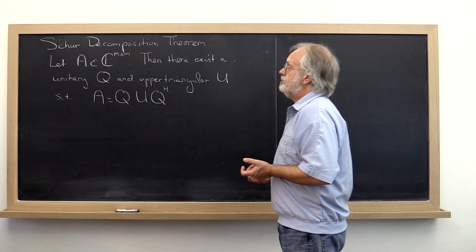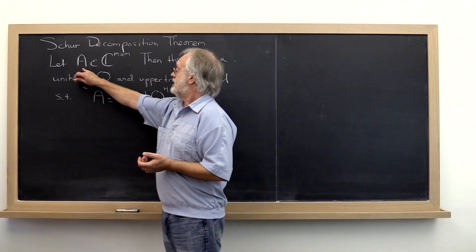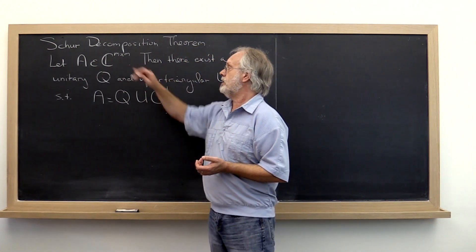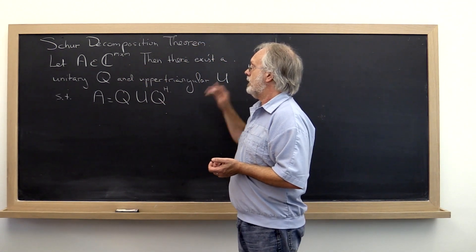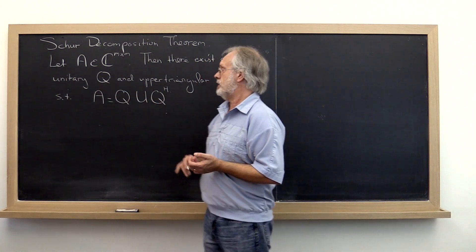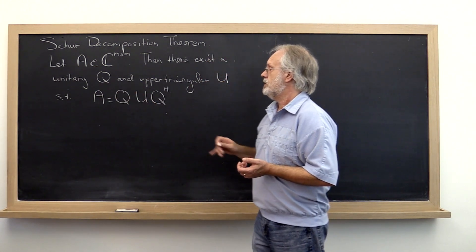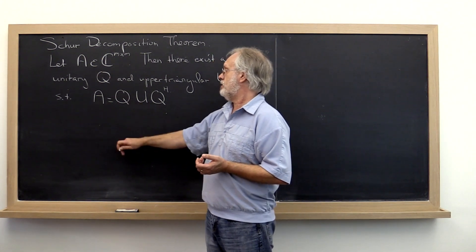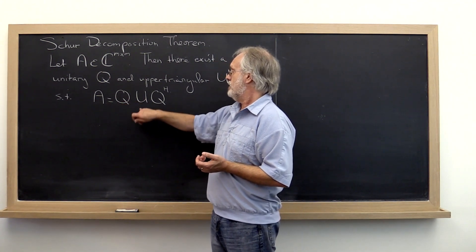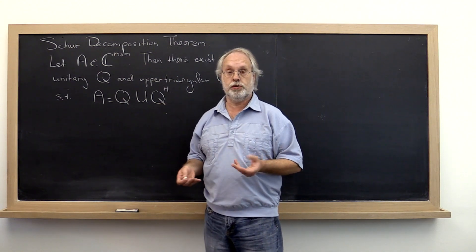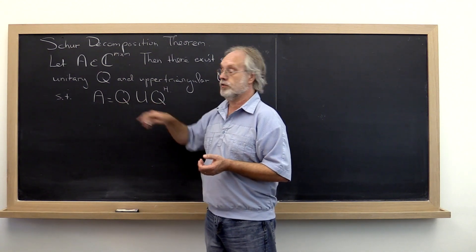And what is that result? Well, it says that given any matrix A, any M by M matrix A, you can always find a unitary matrix Q and an upper triangular matrix U such that A can be written as the product of Q times that upper triangular matrix times the Hermitian transpose of Q, which of course is the inverse of Q.